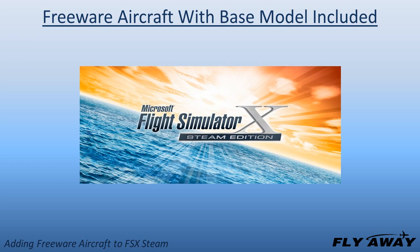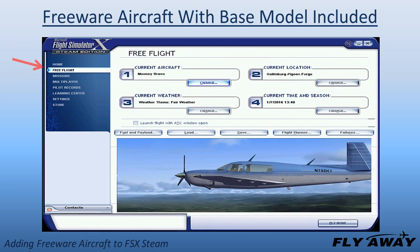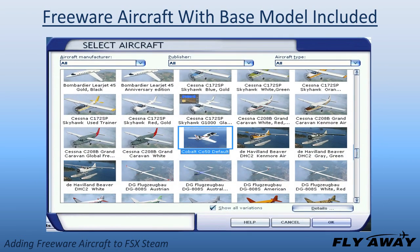Open your FSX STEAM. Click on Free Flight, then Change Current Aircraft. Look through the selection of available aircraft — your newly added aircraft should be among them. Click on your new aircraft to select it, then click on the OK button in the lower right.